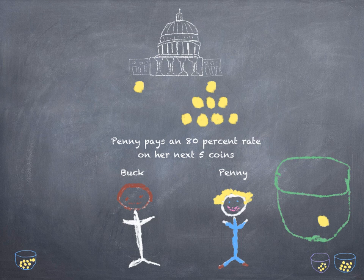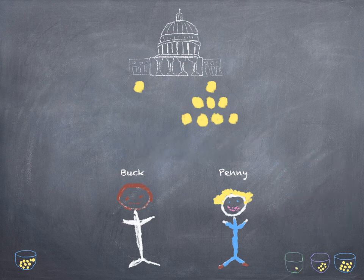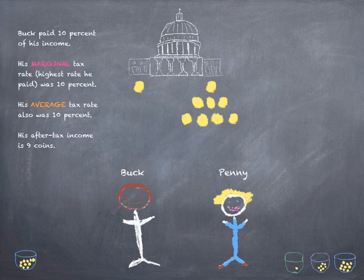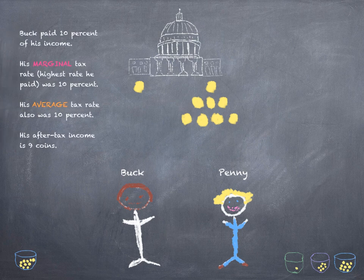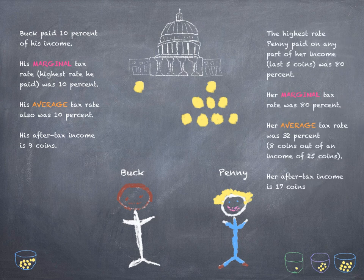We call the highest percentage someone paid on any part of their income their marginal tax rate. So in this case, Buck's marginal tax rate was 10%. His average tax rate — the total amount he paid on all his income — also was 10%. Although Penny had to pay 80% on only a few of her earned coins, we still say her marginal tax rate was 80%. Overall, however, she paid only 32% of her income in taxes, so we say her average tax rate was 32%. And note this: even though Penny paid much more in taxes than Buck, she still ended up keeping about twice as much as him after taxes.